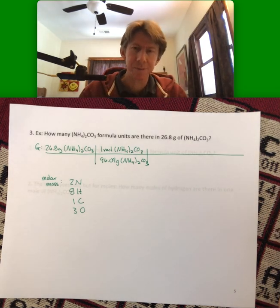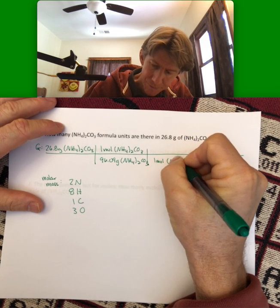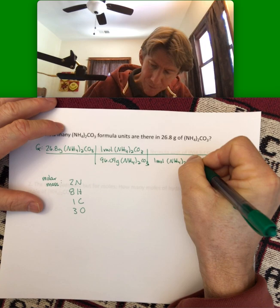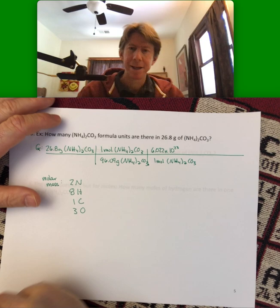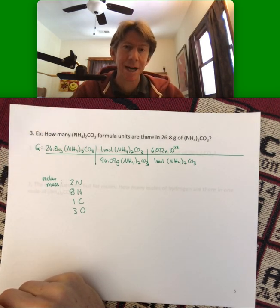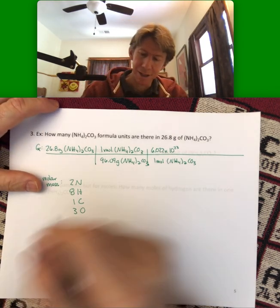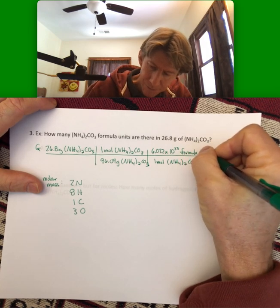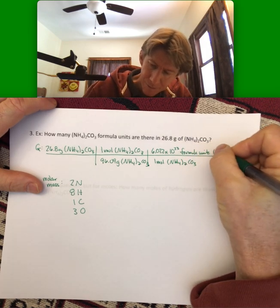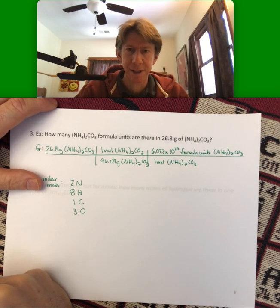And now for this one, it's still Avogadro's number and we're going to put one mole. And 6.022 times 10 to the 23rd. And because it's not technically a molecule, although if you wrote molecules here I'm not going to penalize you, but it's technically formula units of ammonium carbonate.